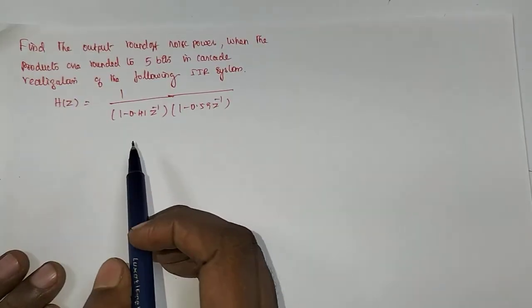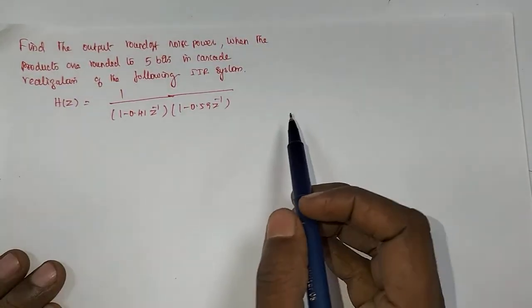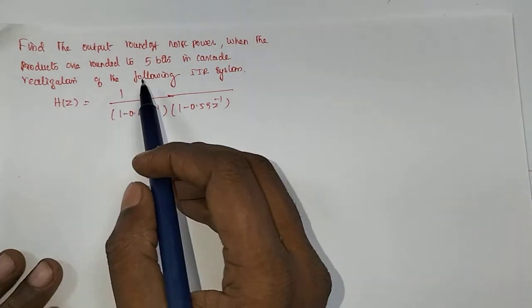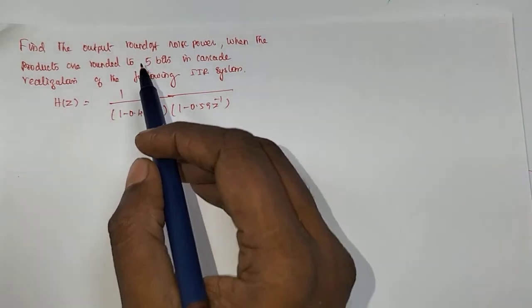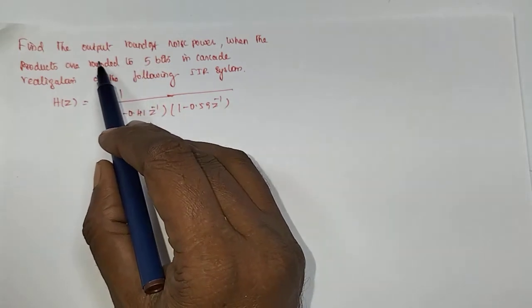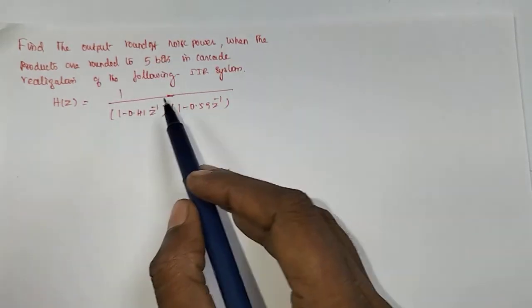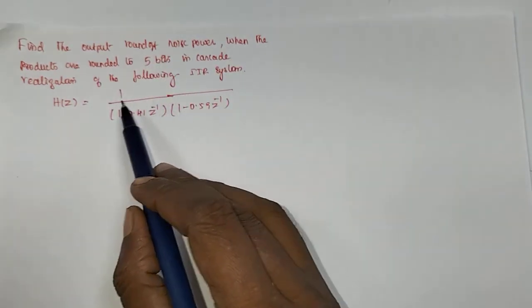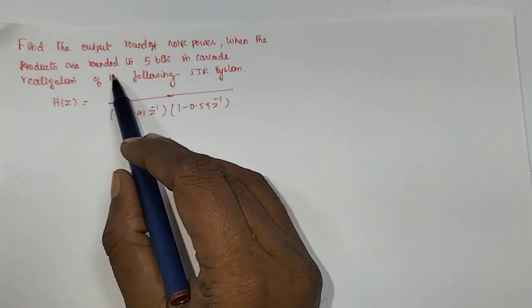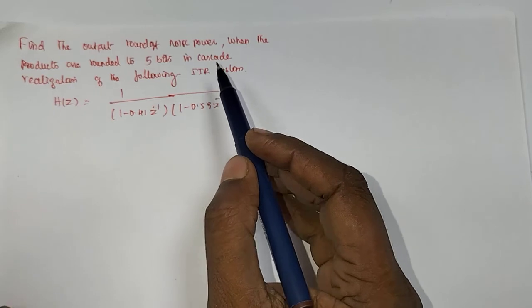Hello viewers, welcome to Career Guidance DSP playlist. In this video lecture we are going to analyze the product quantization error. For this product quantization error we are going to find the output round-off noise power when the system is realized in cascade form and the products are rounded to 5 bits. Very simple problem.